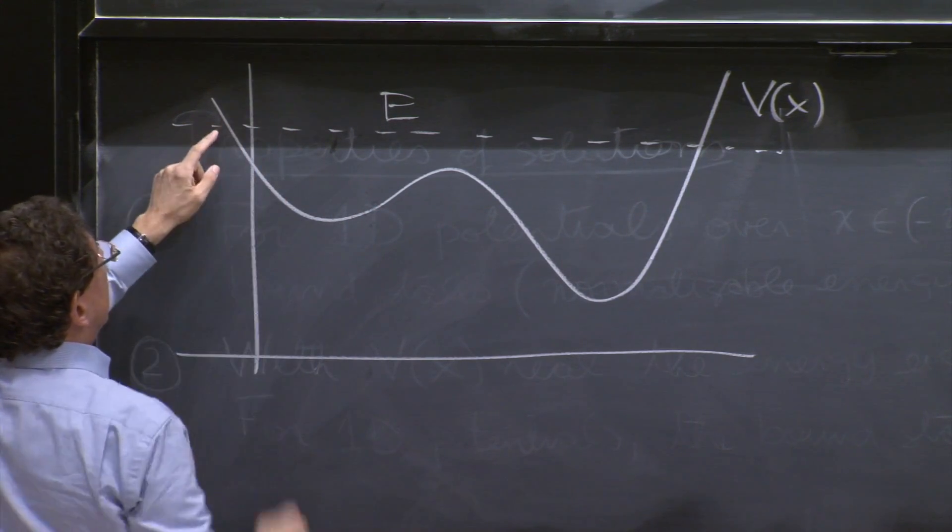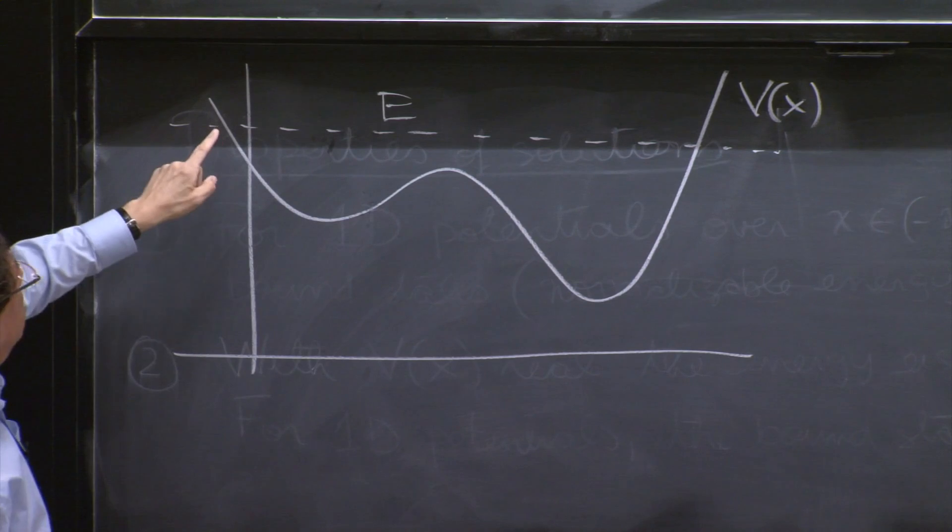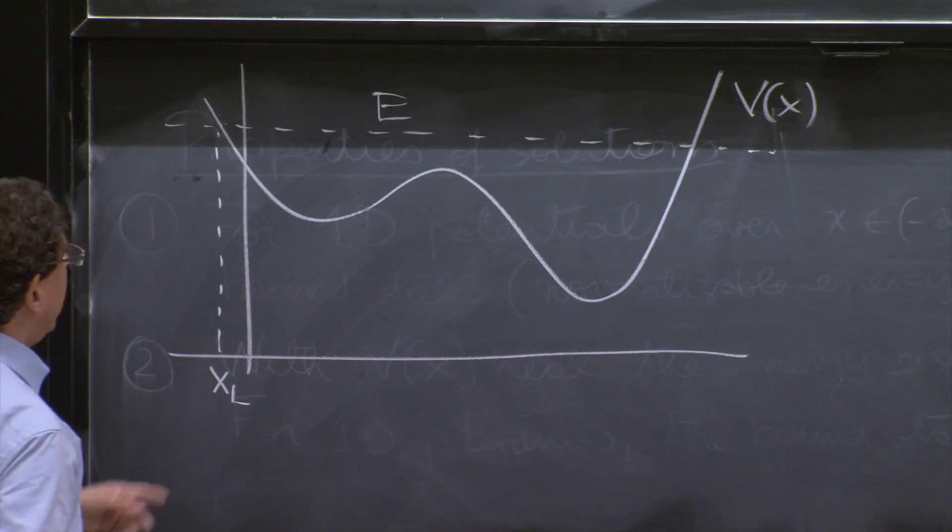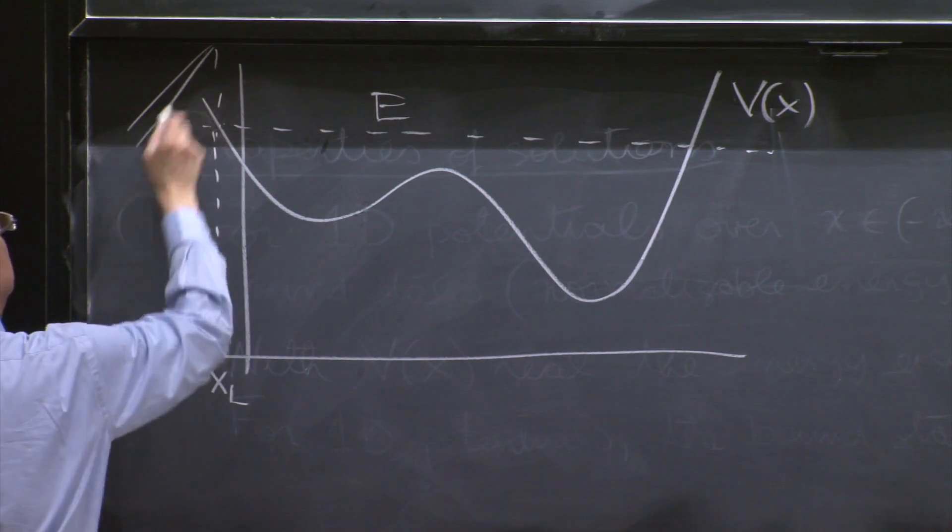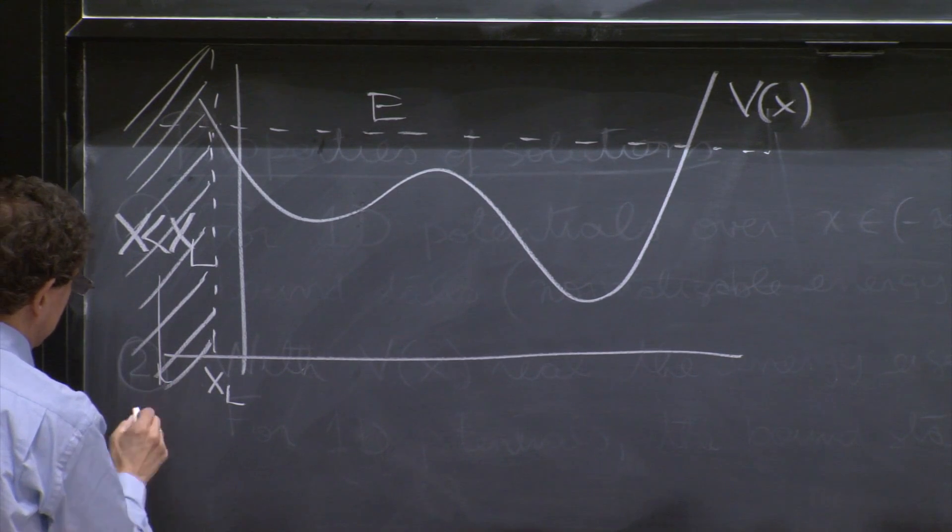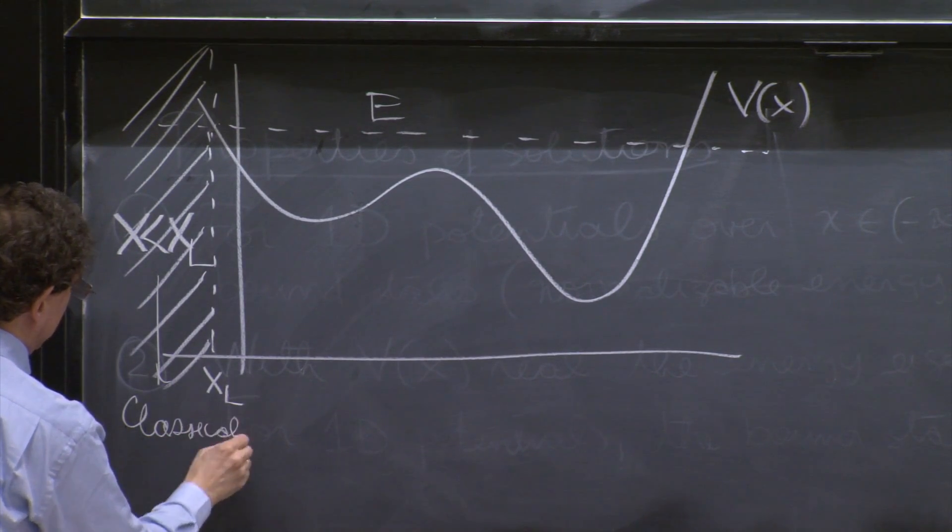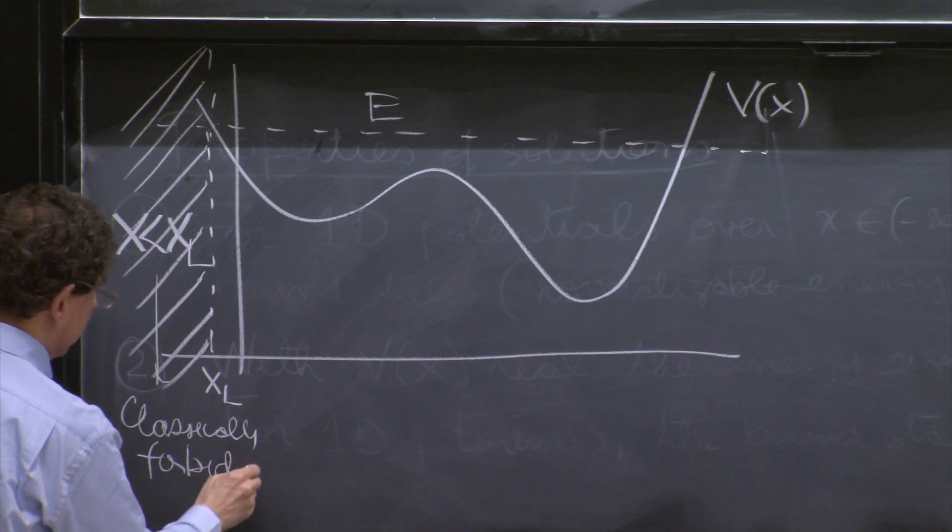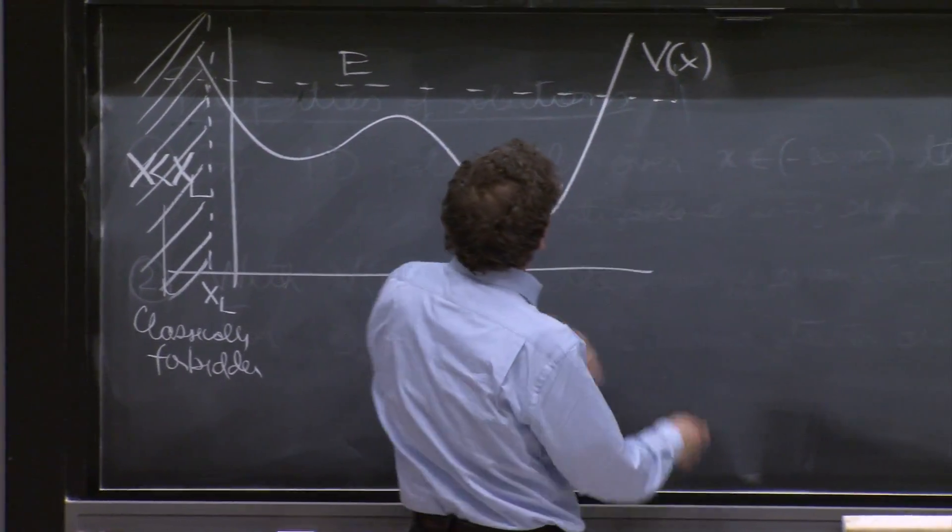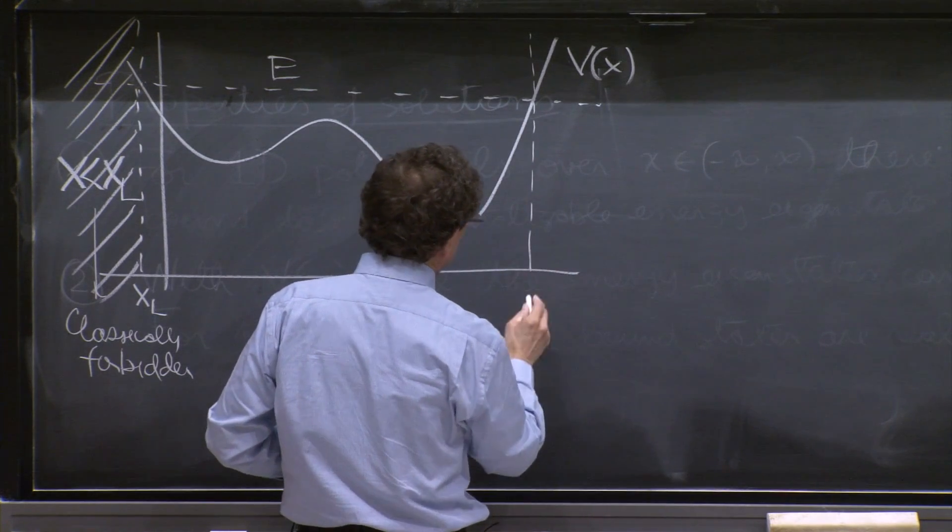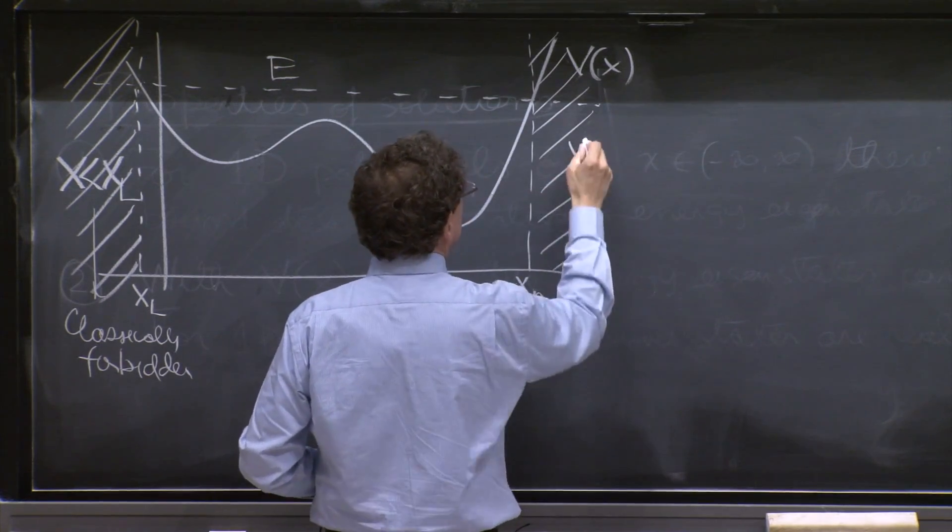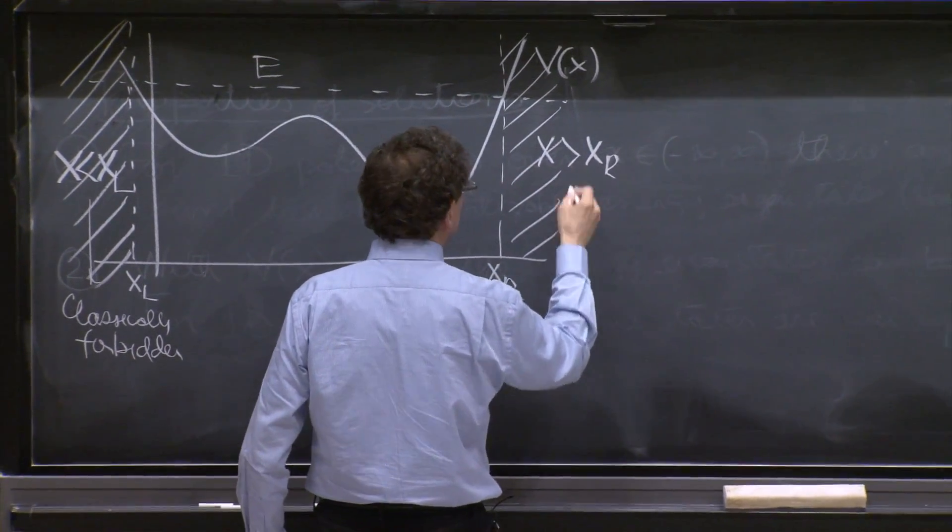The kinetic energy cannot become negative classically. So the particle cannot go to the left of this point called xl, x to the left. So this region, x less than x left, is the classically forbidden. Similarly, on the right, you cannot go beyond here, because then you would have negative kinetic energy. So this is an x right, and everything to the right of x right, x greater than x right, is also classically forbidden.